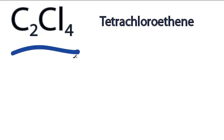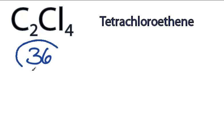This is the C2Cl4 Lewis structure. For C2Cl4, we have a total of 36 valence electrons.